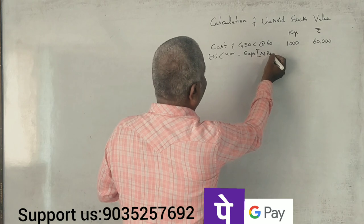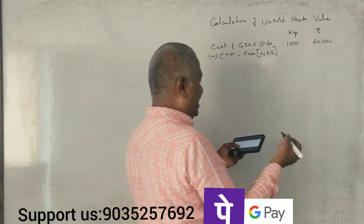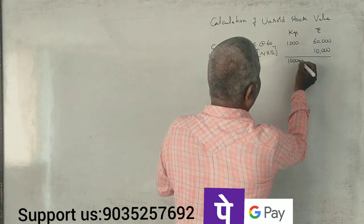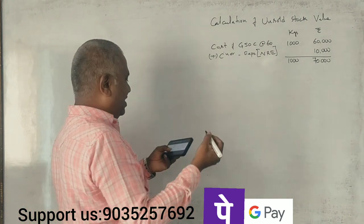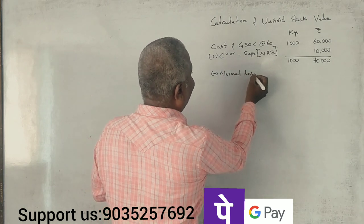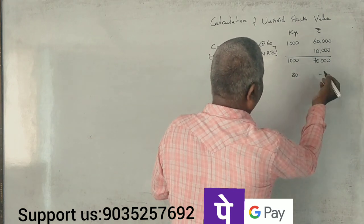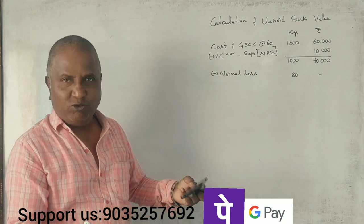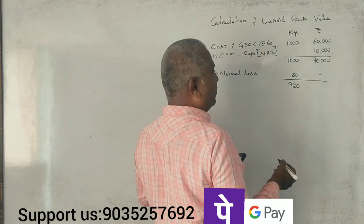Non-recurring expenses total Rs. 10,000. So total cost becomes Rs. 70,000 for 1,000 kgs of material. Now, there is a normal loss — leakage in transit of 80 kgs. So the consignee receives 920 units.